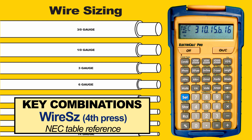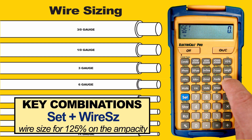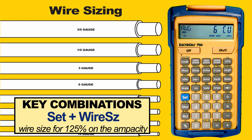This example has been for a 100% wire sizing situation. If you have a motor load and need to do it at 125% on the ampacity, press Set then Wire Size. By pressing Set first we are selecting the second function of the Wire Size button, as indicated on the yellow plastic case right above the button where we see 125%. We now see 125% indicated on the display along with the new wire size — in our case, number six is what we need to use.